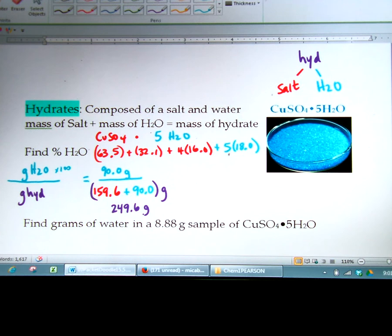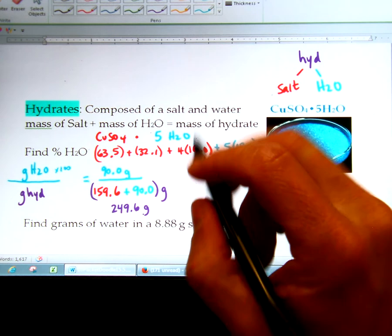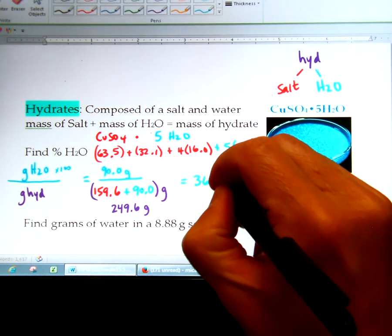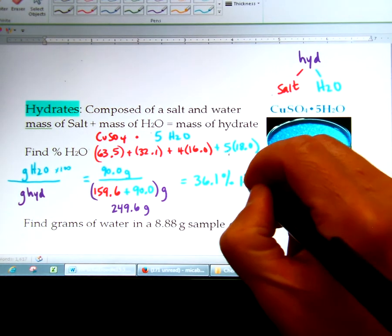So if you do 90 divided by 249.6 times 100, you get 36.1%. So this is going to be 36.1% water.